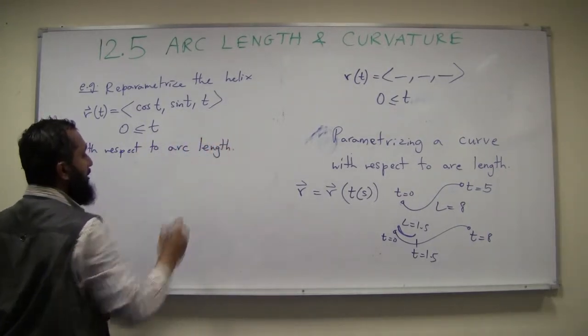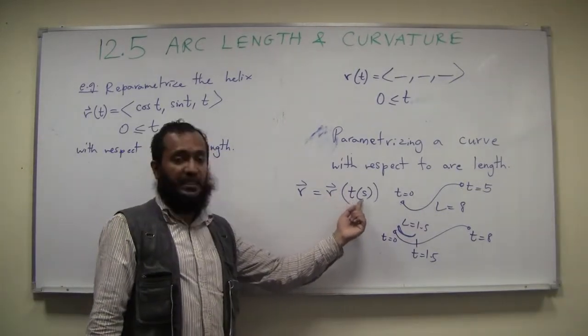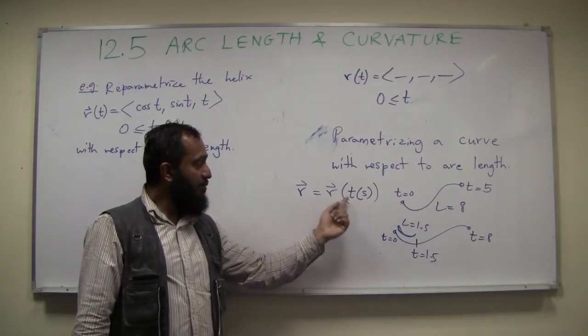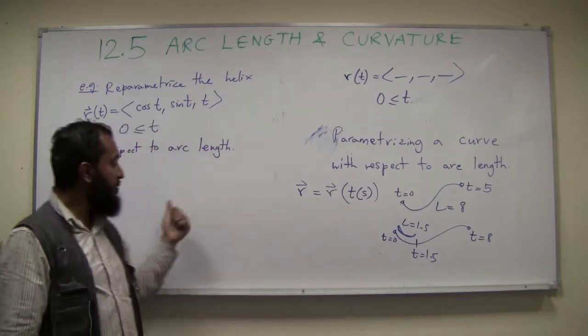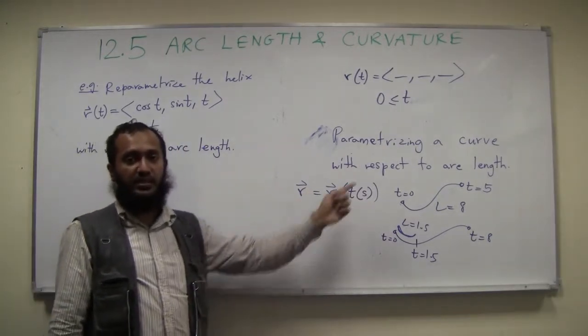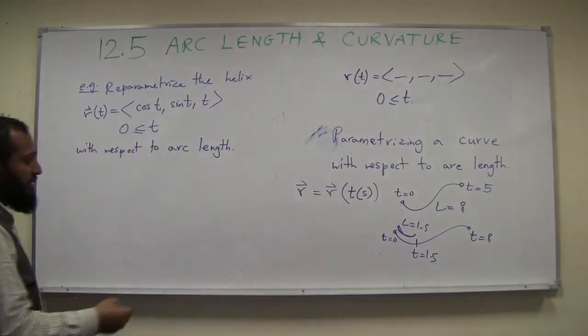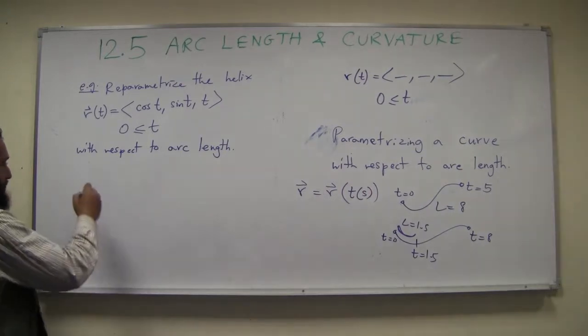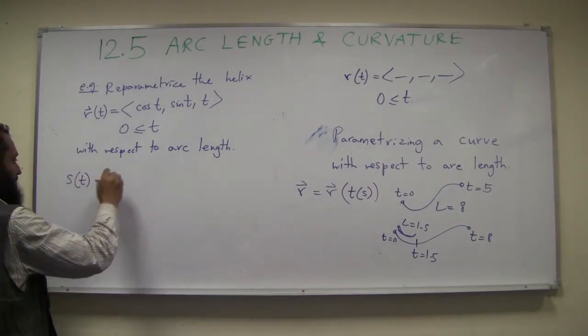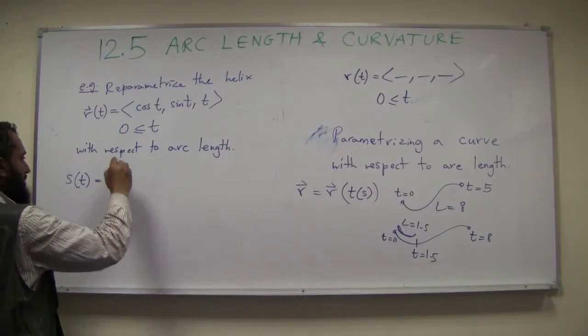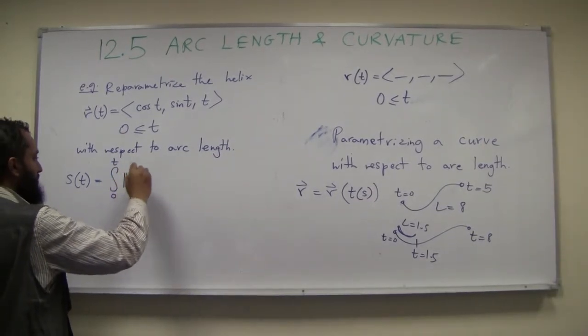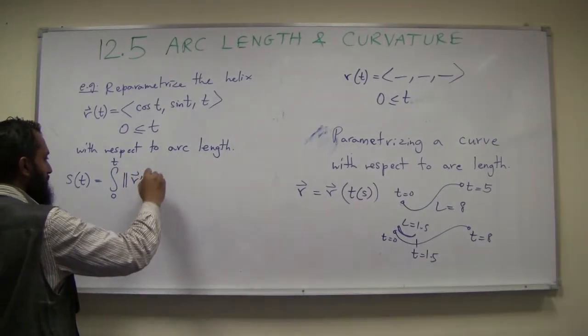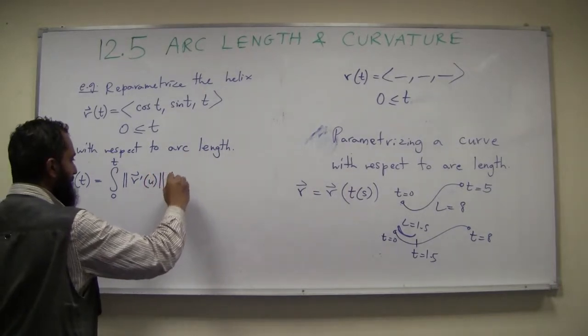So, the first thing we're going to do, remember here, we have to do r of t of s. We have to express t in terms of s. So, first we have to express s in terms of t, so that we can express t in terms of s. We flip the relationship, right. So, what was s of t? s of t is the integral from 0 to t of the r prime of u length du, right.